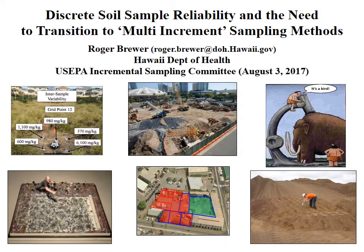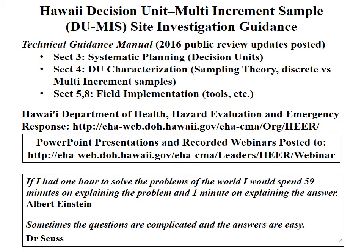This is very similar to work presentations given at other workshops over the past one to three years, but there are new ideas based on recent discussions. What I'll do today is start back at the beginning. One problem we missed in early workshops through ITRC and other groups on incremental sampling methodology is that we never really had data to discuss the specific problems with discrete soil samples. Our office went out two or three years ago — we should have done it 25 years ago — and collected hundreds of co-located samples to get a much better idea of exactly how reliable, or unreliable, the data are.